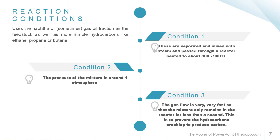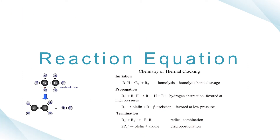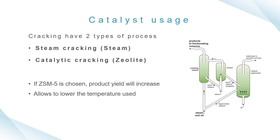Third condition: the gas flow is very fast, so the mixture only remains in the reactor for less than a second. This is to prevent the hydrocarbon from cracking to produce carbon. The reaction equation is closely related to the chemistry of thermal cracking, which involves initiation, propagation, and termination.